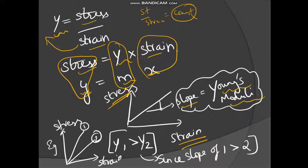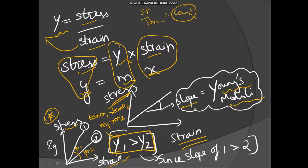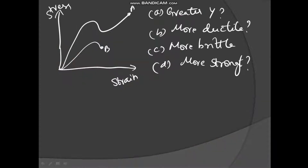For example, in a stress-strain graph with stress on the Y-axis and strain on the X-axis, if line 1 makes angle theta-1 and line 2 makes angle theta-2 with the X-axis, then tan(theta-1) > tan(theta-2), which means slope 1 > slope 2. Therefore, Young's modulus of material 1 is greater than Young's modulus of material 2.